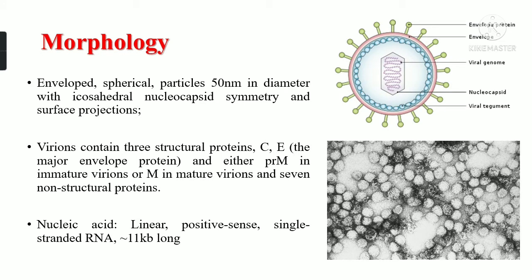Regarding the morphology of the virus, yellow fever virus is an enveloped spherical particle with a diameter of around 50 nanometers, with icosahedral nucleocapsid symmetry and surface projections acting as spikes for binding. The virion contains three structural proteins: C, E, and either PrM present in immature virions, or M protein present in mature virions. It also contains seven non-structural proteins. The nucleic acid is linear, positive-sense, single-stranded RNA of around 11 kb. The electron microscopic and animated diagrams of the virus are shown in the image.